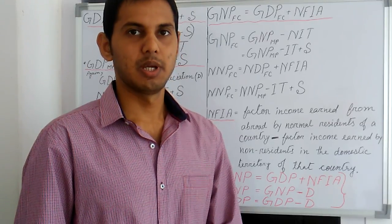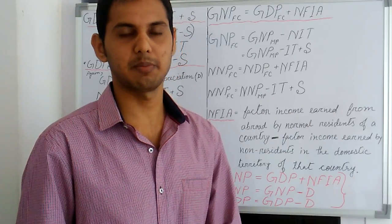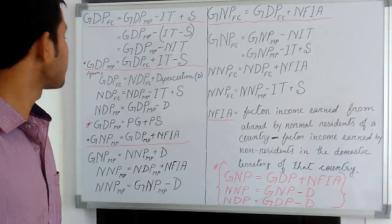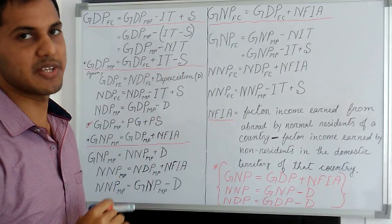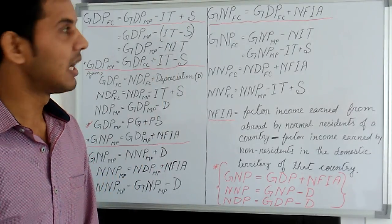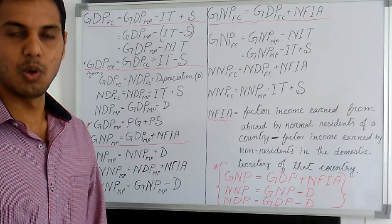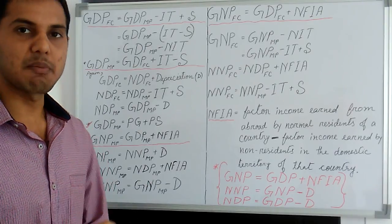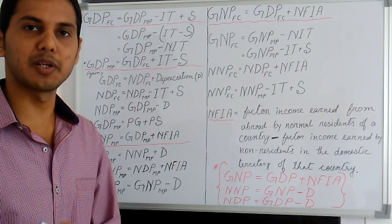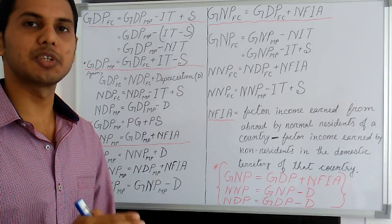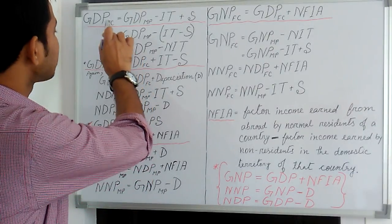What is GDP at factor cost? In my previous video, I have already discussed about GDP at factor cost and GDP at market price. GDP at factor cost is equal to GDP at market price minus IT plus S, where IT denotes indirect taxes and S denotes subsidies. Indirect taxes are those taxes whose burden can be shifted. Subsidies are cash grants given by the government to enterprises to encourage production of certain commodities, to promote export, or to sell goods at prices lower than free market prices.